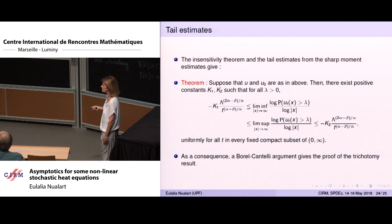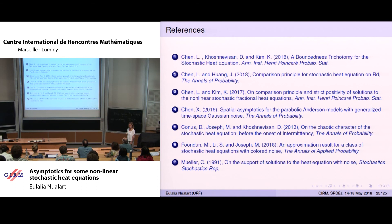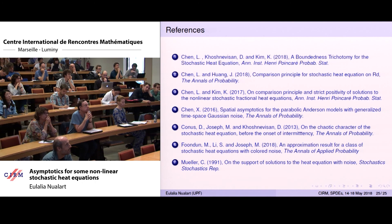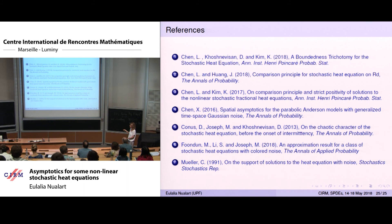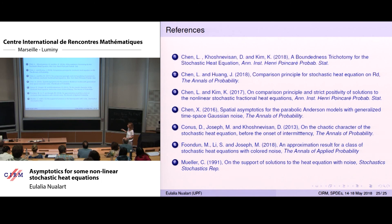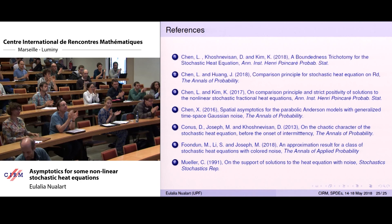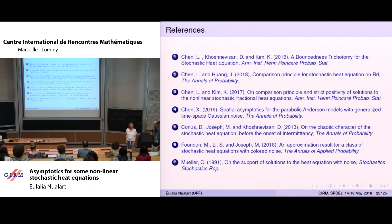Just to finish, let me show the references. The first comparison principle for the heat equation in this setting is Mueller 1991. Extensions include the paper by Le Chen and Kim in the Annals of Probability, the paper on space-time white noise, and the one for the weak equation. The trichotomy theorem for space-time white noise is in the first paper, and the case with initial condition bounded below was done in another paper. Our paper is not yet submitted but will be soon. Thank you for your attention.